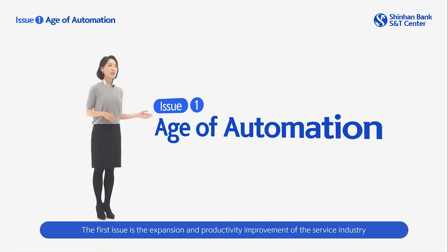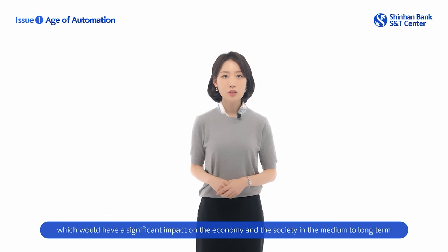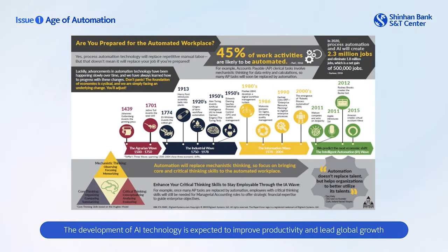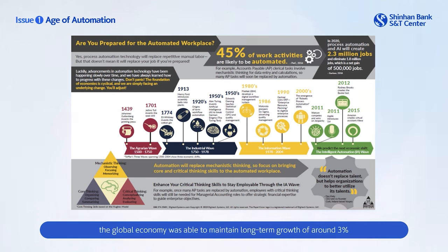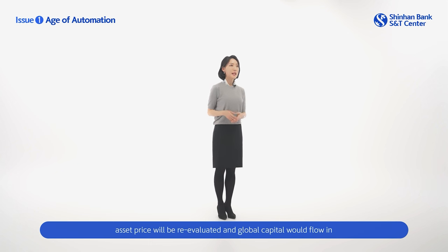The first issue is the extension and productivity improvement of the service industry brought about by technological progress. In the era of AI, automation will be widely applied not only to manufacturing but also to the service industry, which would have a significant impact on the economy and society in the medium to long term. The development of AI technology is expected to improve productivity and lead global growth. As productivity improvement compensated for continuous job losses, the global economy was able to maintain long-term growth of around 3%. For countries with advanced AI-related technologies and a higher share of the service sector, asset prices will be re-evaluated and global capital would flow in, which could lead to appreciation of the currency.